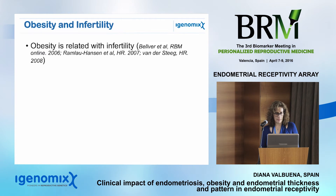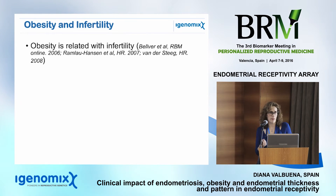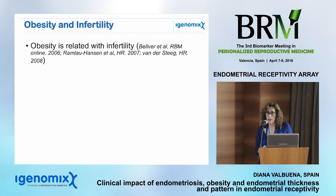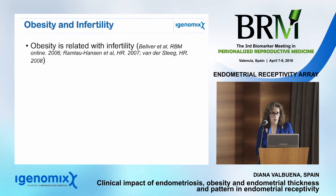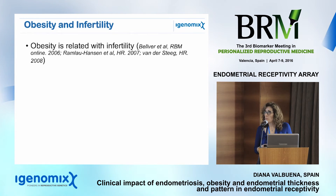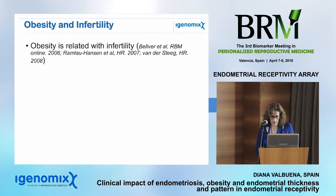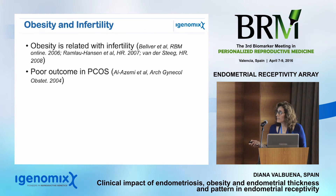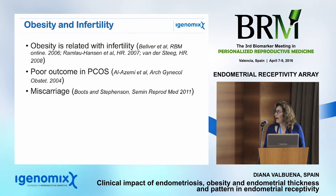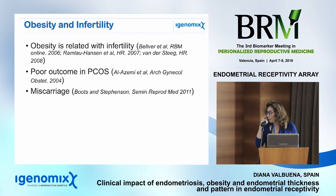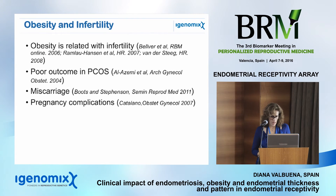Now, moving to obesity. There are many published studies relating infertility and obesity, applying to all routes to conception — natural cycles, IVF, ICSI, or egg donation — and especially when the body mass index is high or when patients have polycystic ovarian syndrome. A high rate of miscarriage and pregnancy complications in obese women is also well documented.